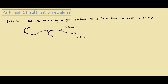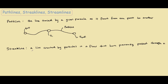Next we have a streakline. A streakline is simply a line created by particles in a flow that have previously passed through a common point. So let's say we have some injection point, like a pipe, where you put in some dye continuously. You have one particle here, another here, and so on — say there's a cylinder here. These particles all passed through a common point before, so you would consider this line a streakline.